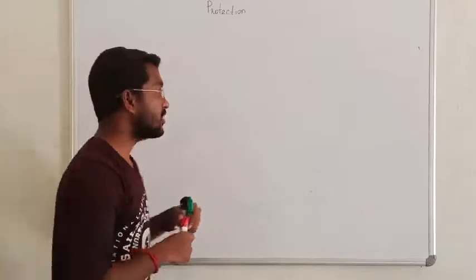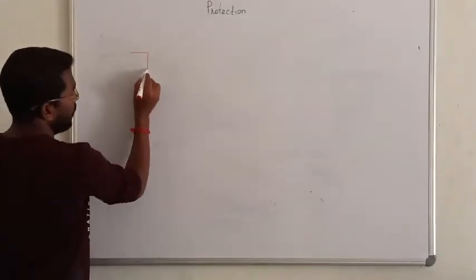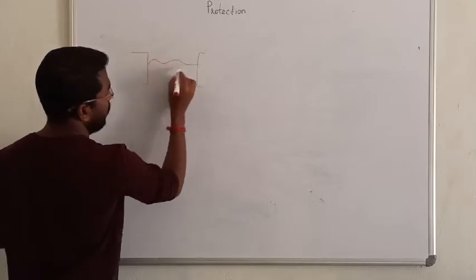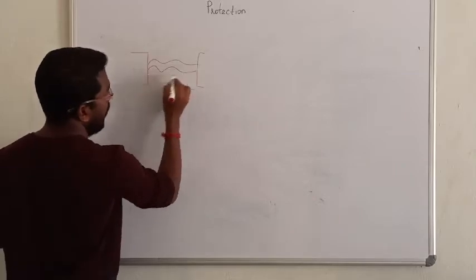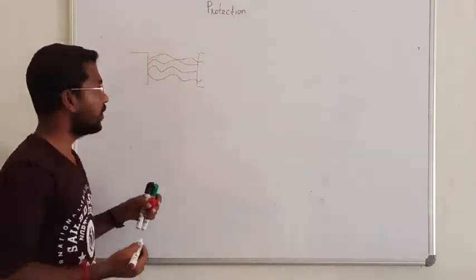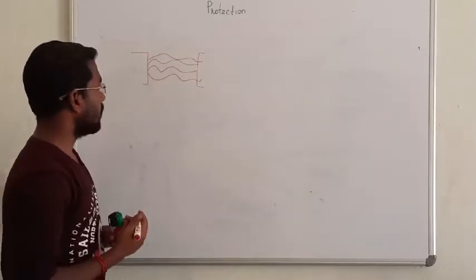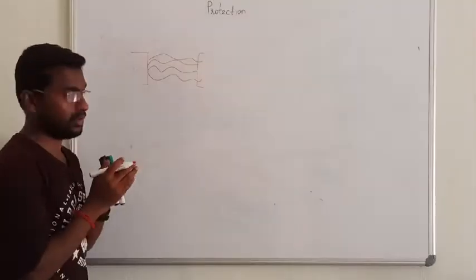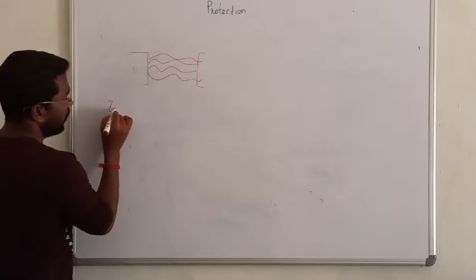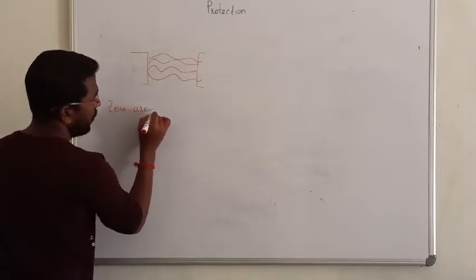Hello guys. So last day, what do you think? In the two contacts, the arc exists. Now we can remove this arc. First of all, this is called zero arc interruption.